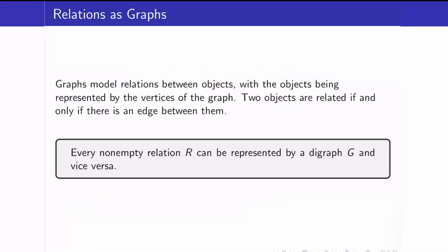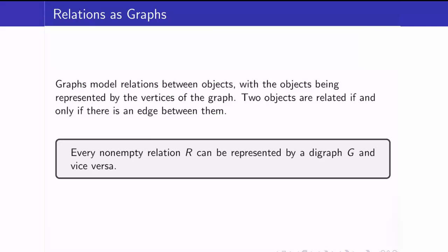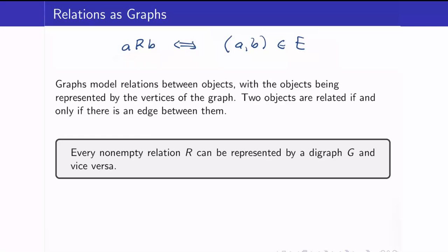Graphs model relations between objects, with the objects being represented by the vertices of the graphs. Two objects are related if and only if there is an edge between them. So A will be related to B if the ordered pair AB is an element of the set of edges. Every non-empty relation R can be represented by a digraph and vice versa. If we have a graph, we can define a relation on the set of vertices, and conversely, if we have a relation, we can get its corresponding graph.